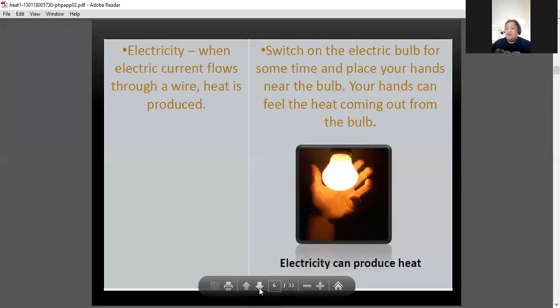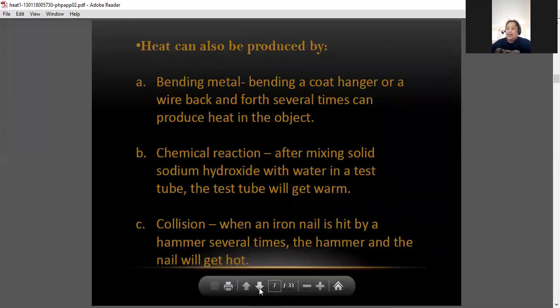Then we have also electricity. When the current flows through a wire, heat is produced. Next is heat can also be produced by bending metal, chemical reaction, and collision.